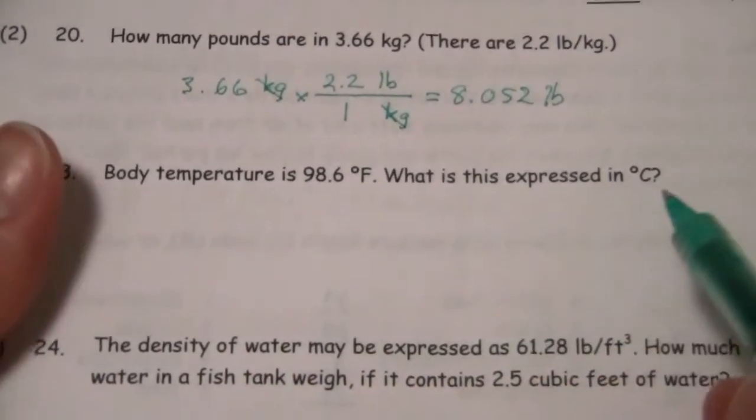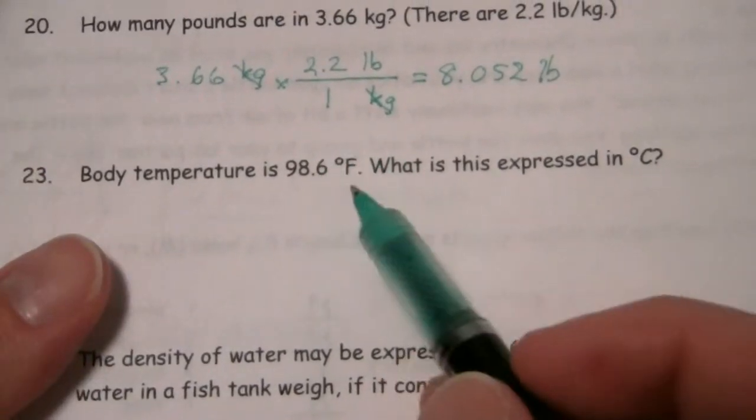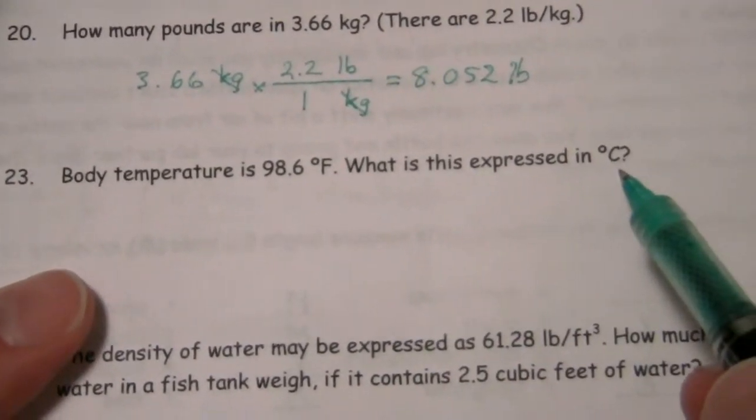Now for this one it's a temperature conversion. Body temperature is 98.6 degrees Fahrenheit. What is this expressed in degrees Celsius?